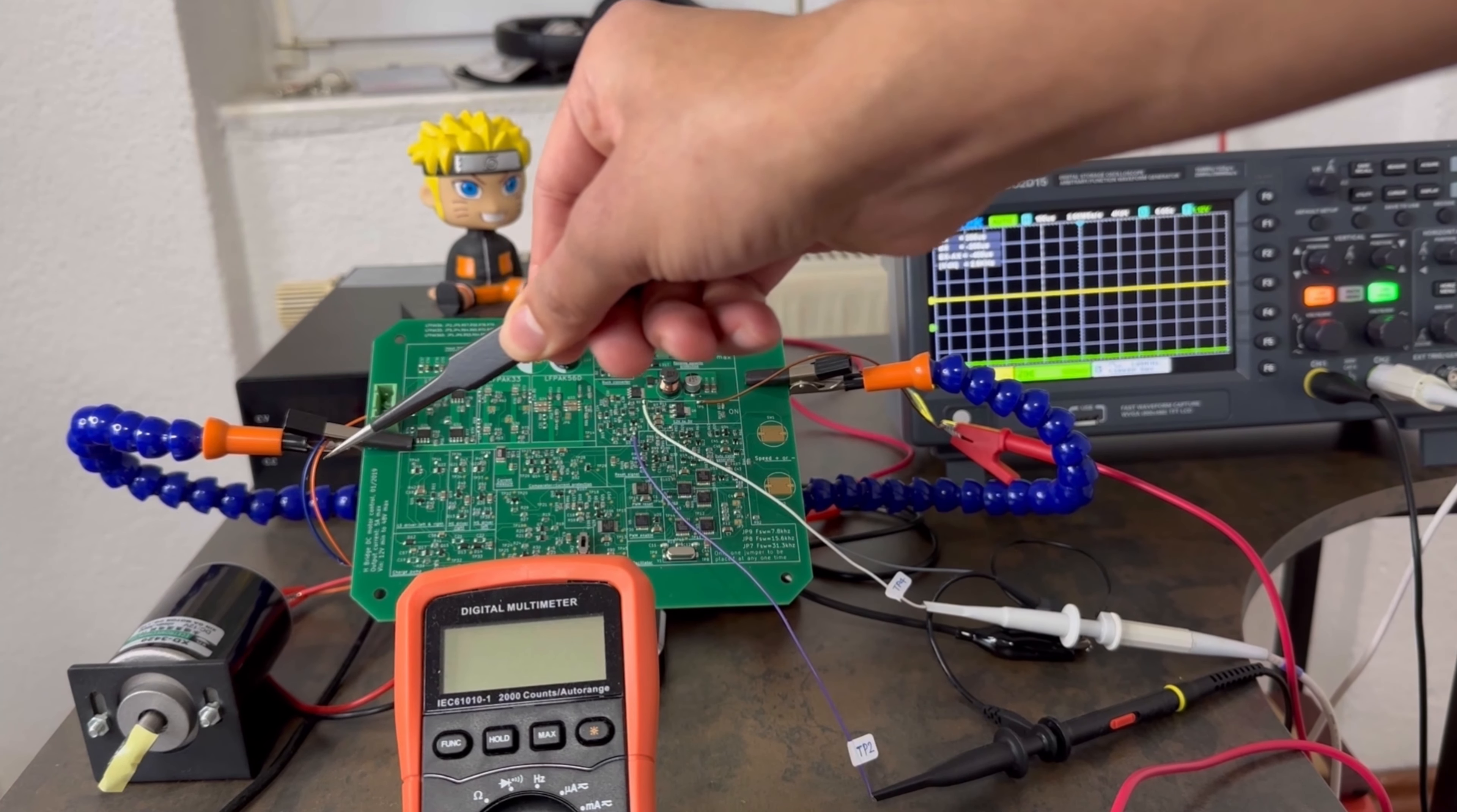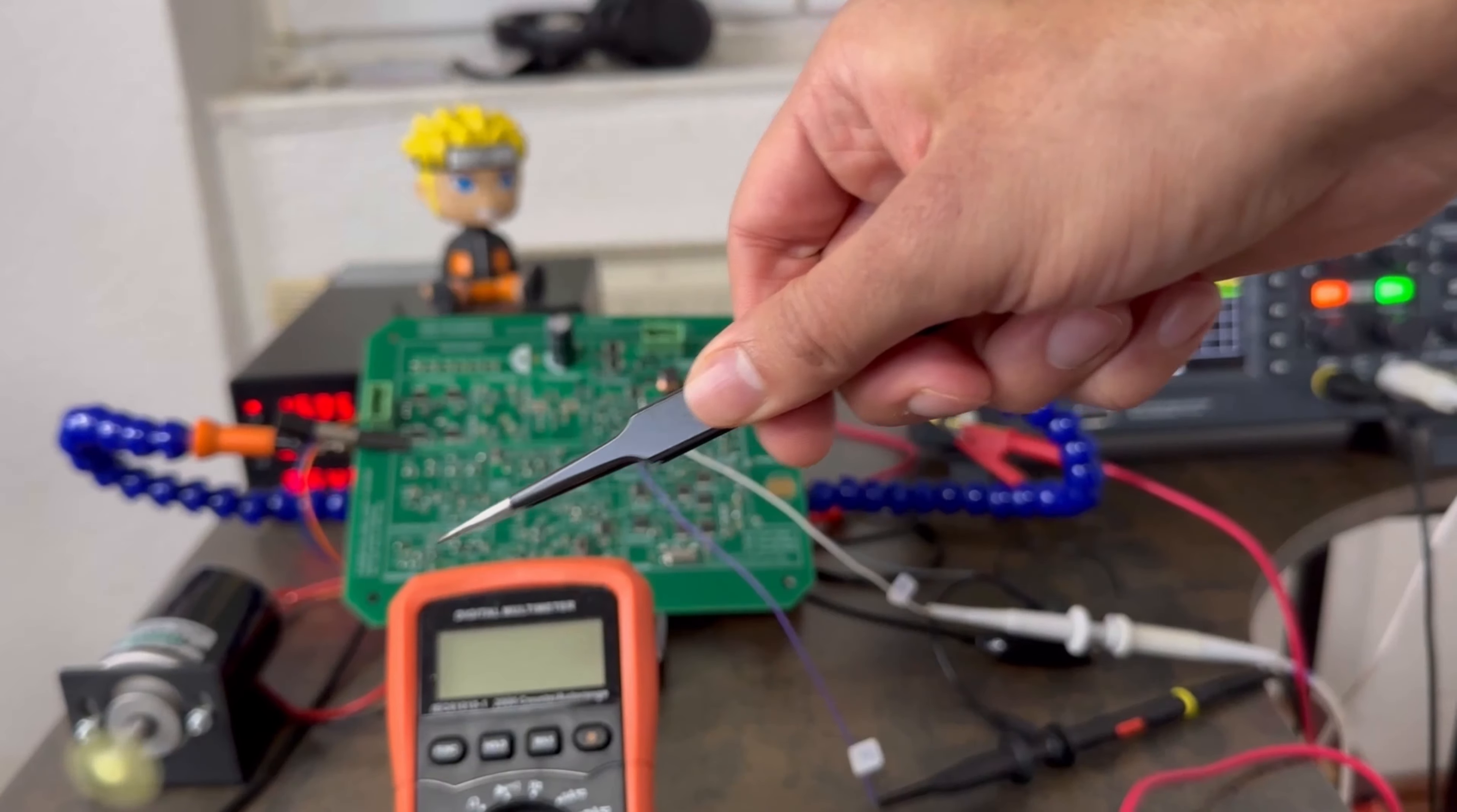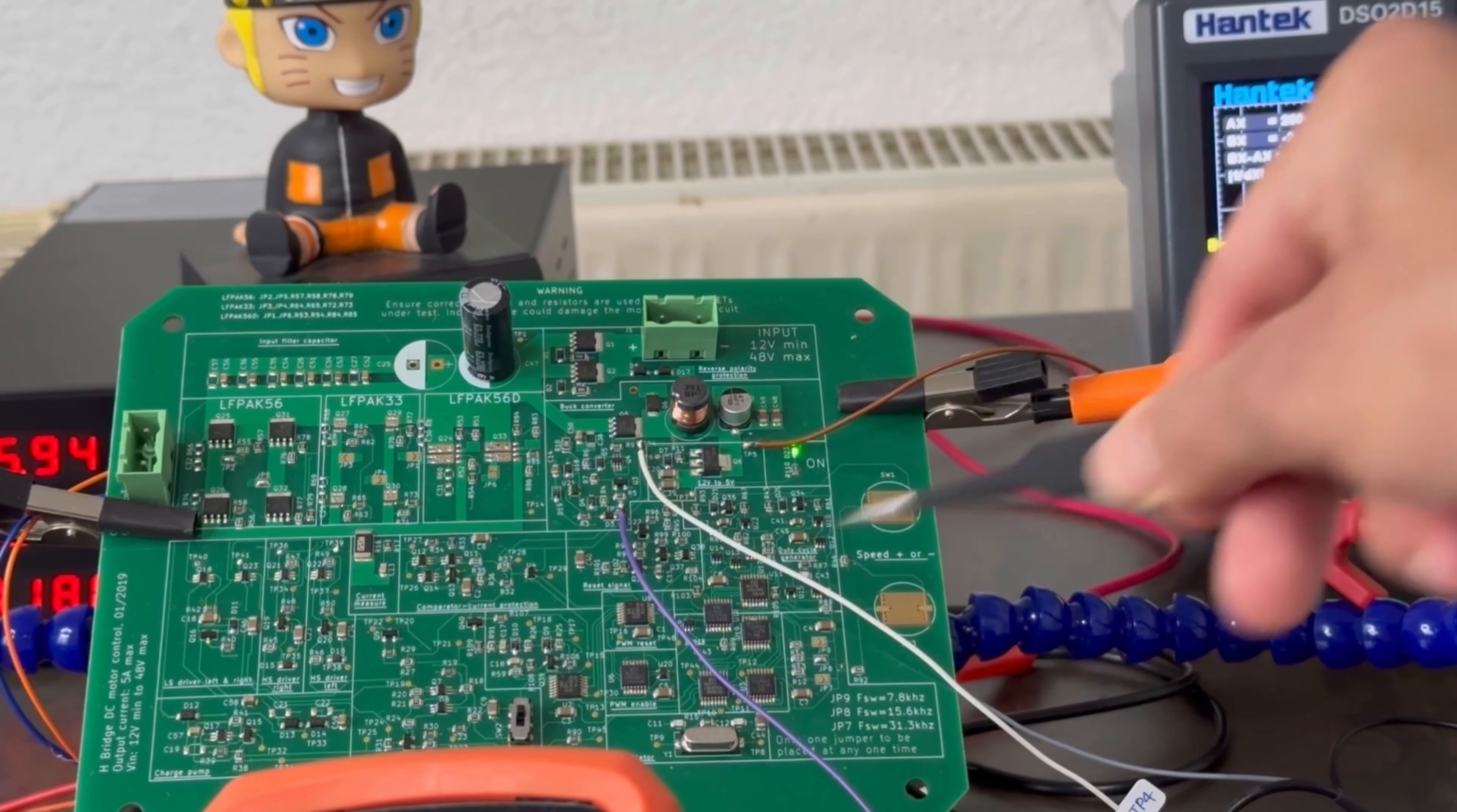The load is connected. I have already turned on the scope. This is our Infineon XMC4700 development board. We are checking the output voltage on DMM. Now, I will turn on the power supply. Yeah, as you can see, the motor is running. Right now, the input voltage is around 16V. Let's see the behavior of this circuit, which we just saw, which is mounted over here.